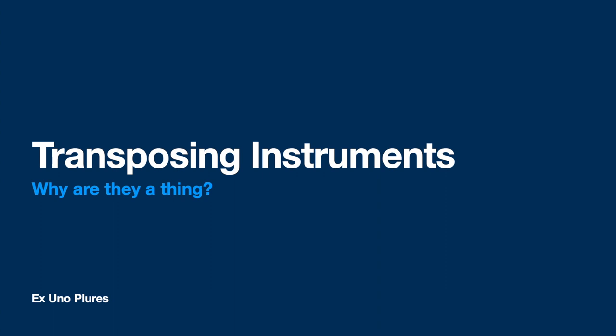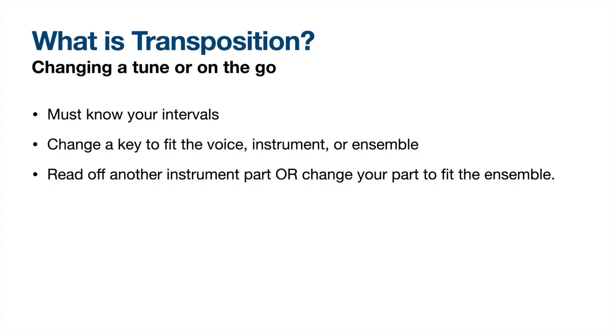Good day. I've seen this question pop up on music theory and saxophone forums, so I figured I'd give an explanation on why transposing instruments are a thing. It seems to be very confusing, and I'll admit that it is, but I'm going to explain a simplified version of it and then go into detail on why we have them. If you just want to know what it is and what you need to do, I'll cover that first — if you want to know why, keep watching.